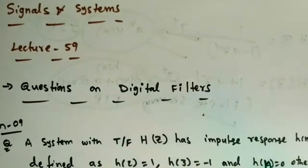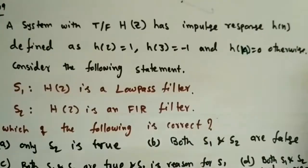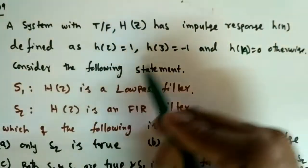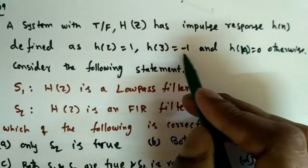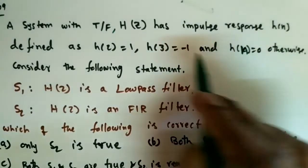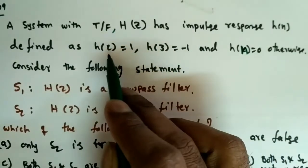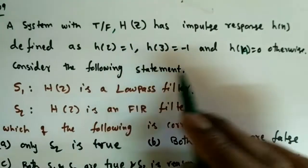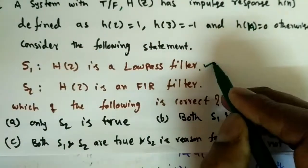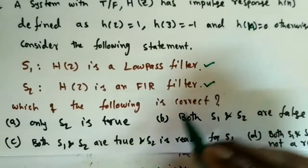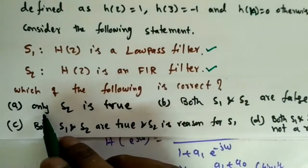In this lecture I'm going to solve a few problems on digital filters. This question came in GATE 2009. A system with transfer function H(z) has impulse response h(n) defined as h(2)=1, h(3)=-1, and h(n)=0 otherwise. Consider the following statements: S1 says H(z) is a low-pass filter, and S2 says H(z) is an FIR filter.